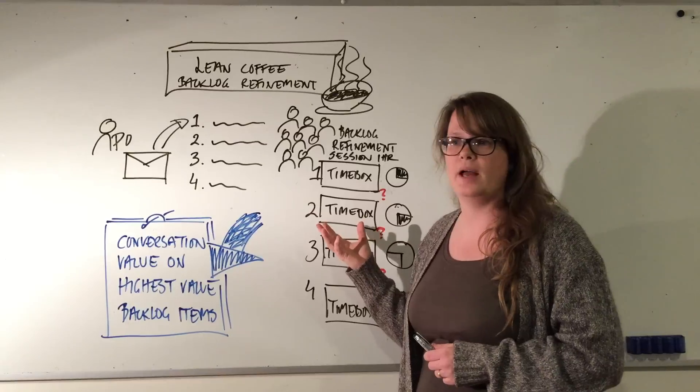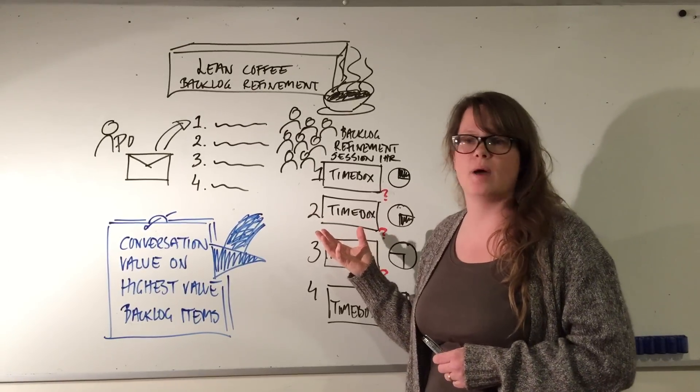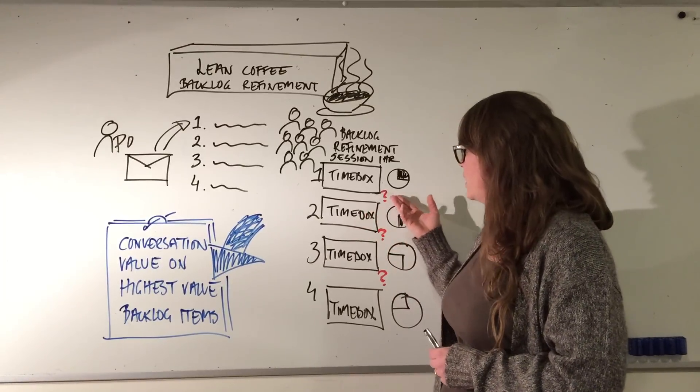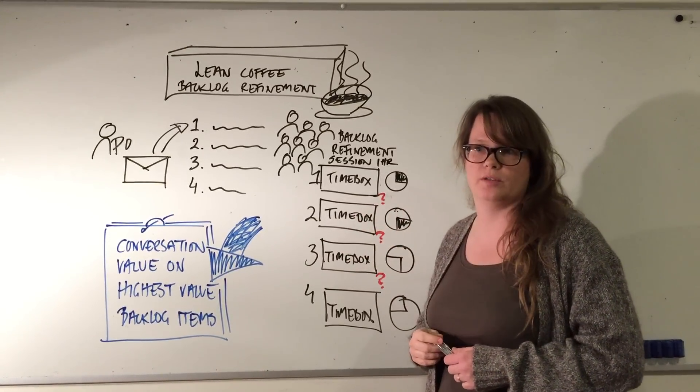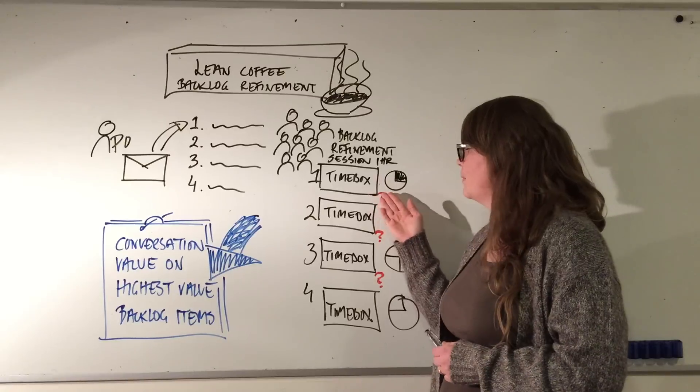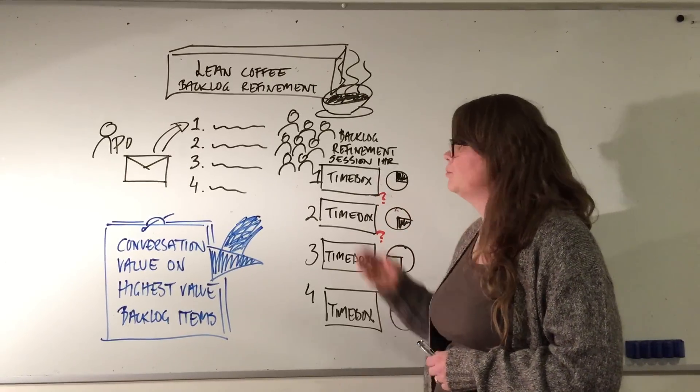But if the team is in a good flow and the product owner really wants this in the upcoming iteration, you ask: do we want to invest the next 15-minute time box on this item, or do we have enough for now and pull the next item?